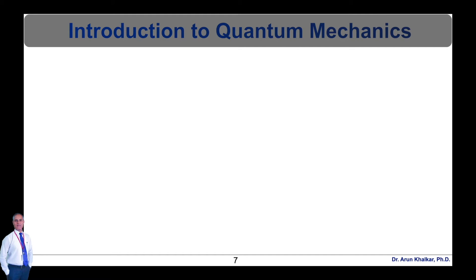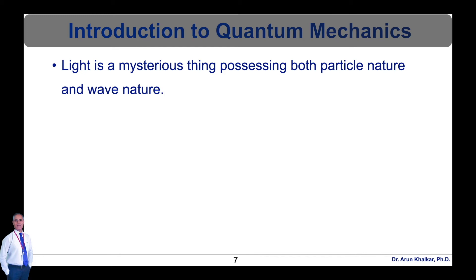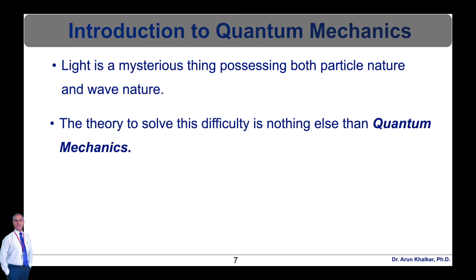As I have explained in my previous lecture videos, light is a mysterious thing possessing both particle nature and wave nature. This is very difficult to understand within classical theory consisting of Newtonian mechanics and Maxwellian electromagnetism. The theory to solve this difficulty is nothing else than quantum mechanics.